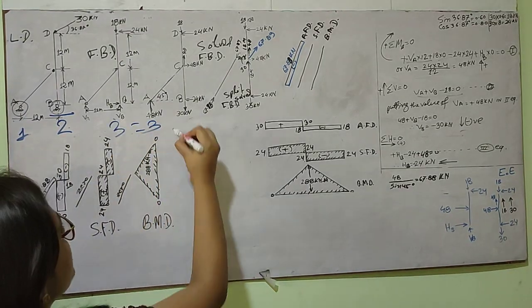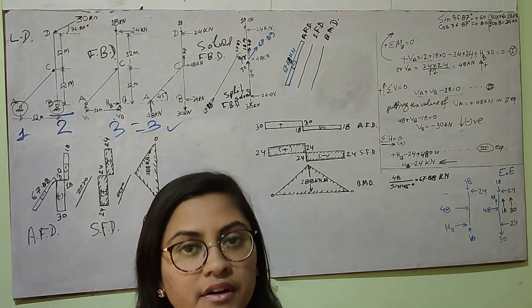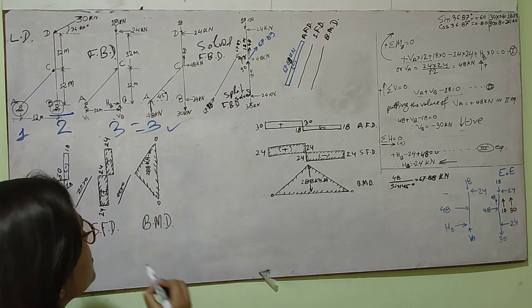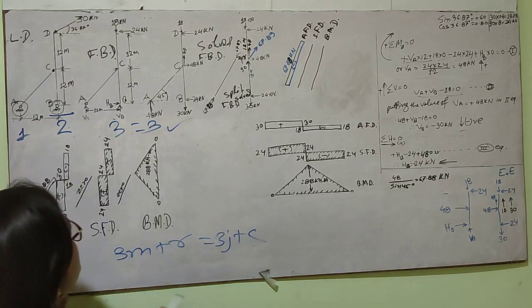So three equals three, meaning this structure is statically determinate. If you find this method confusing, I'll tell you another method using a formula: 3m plus R equals 3j plus C.